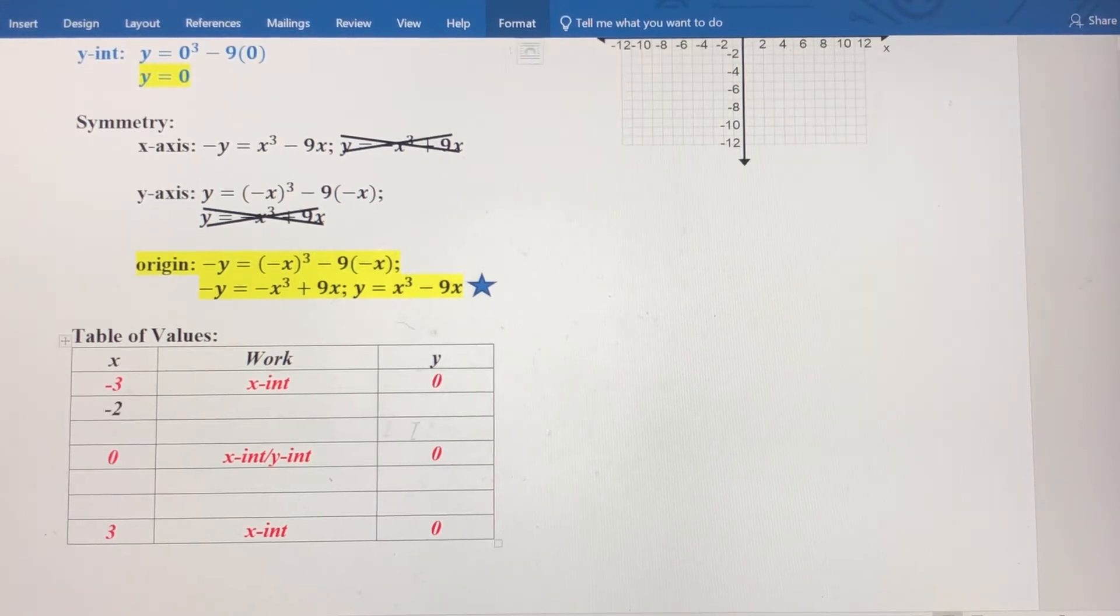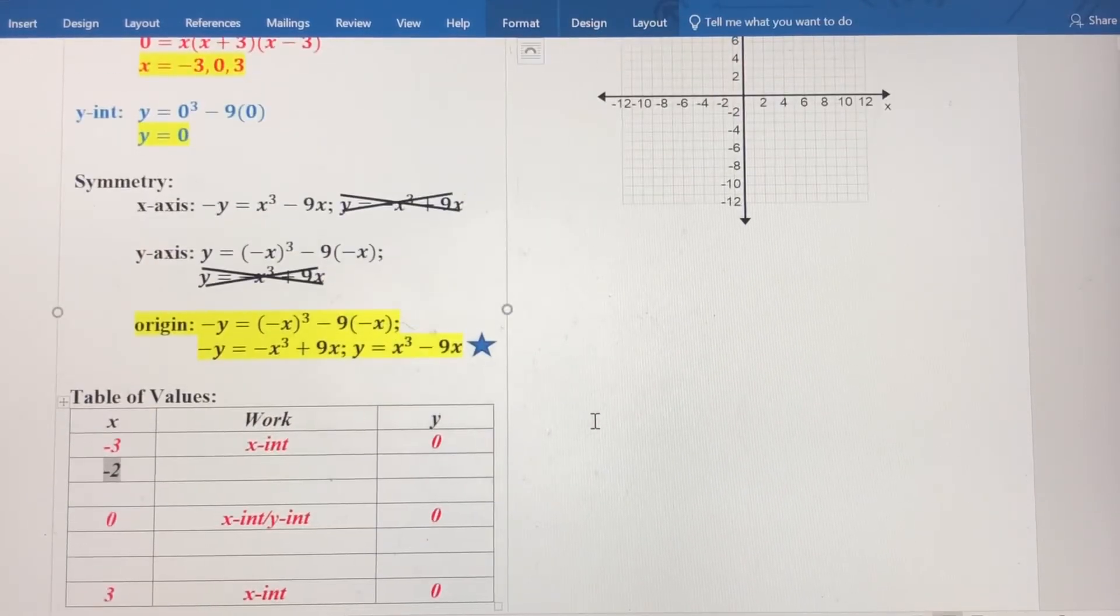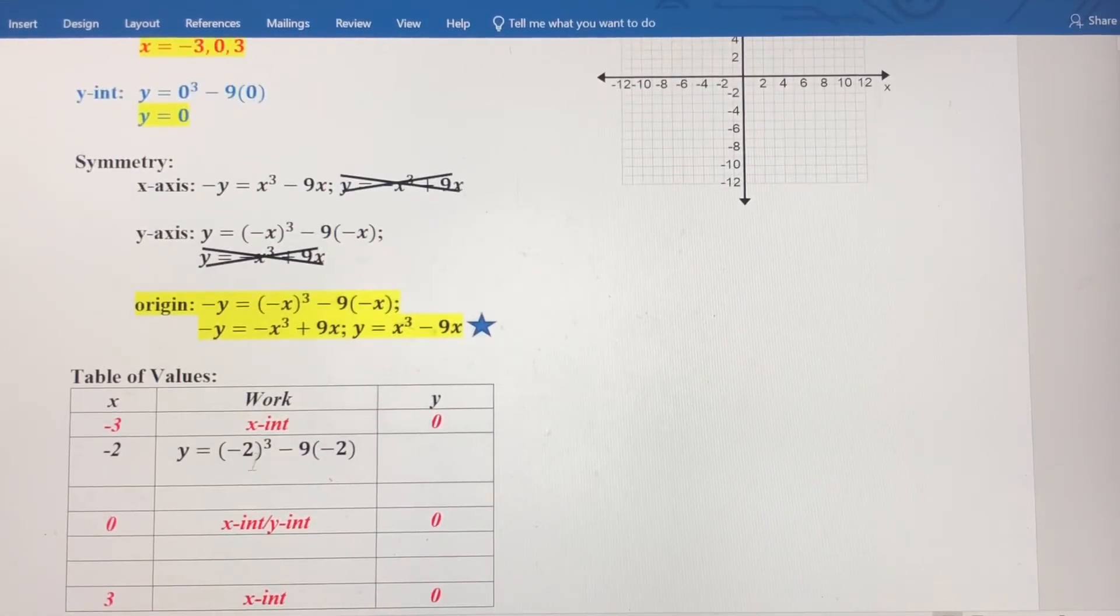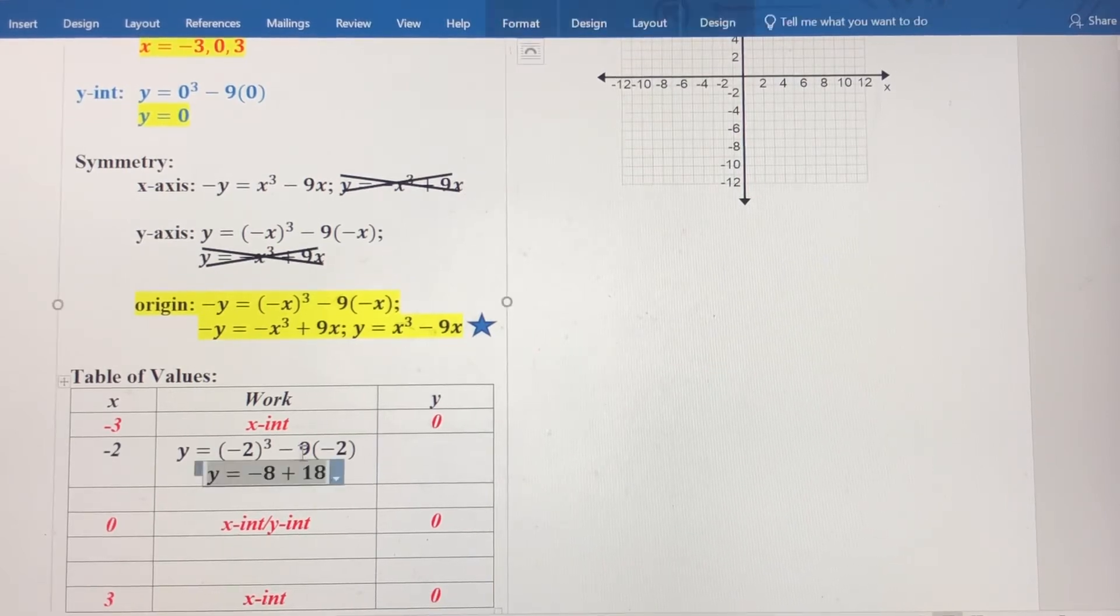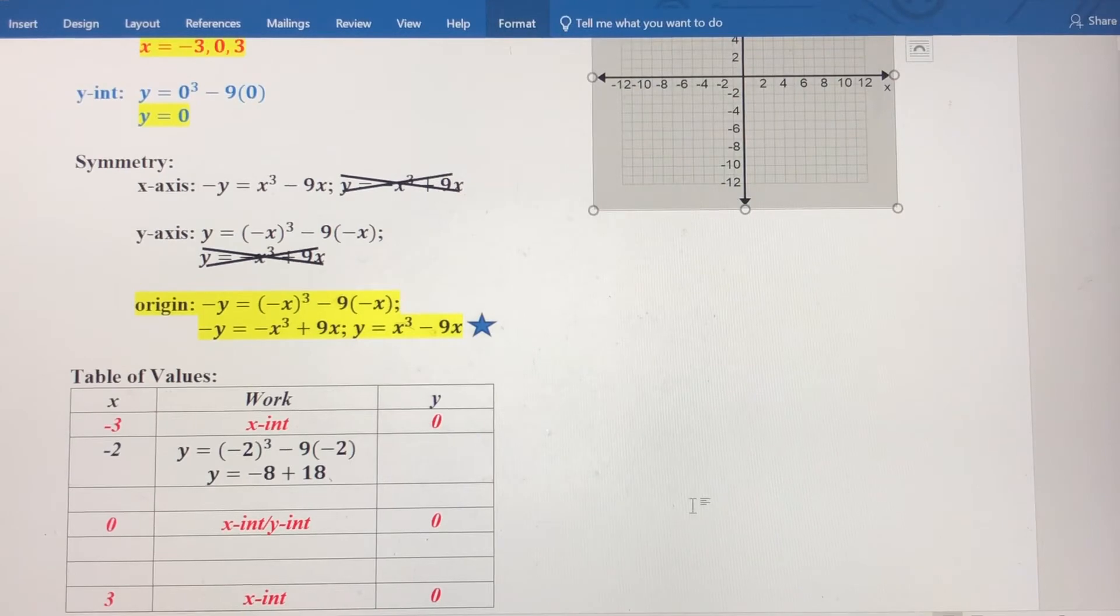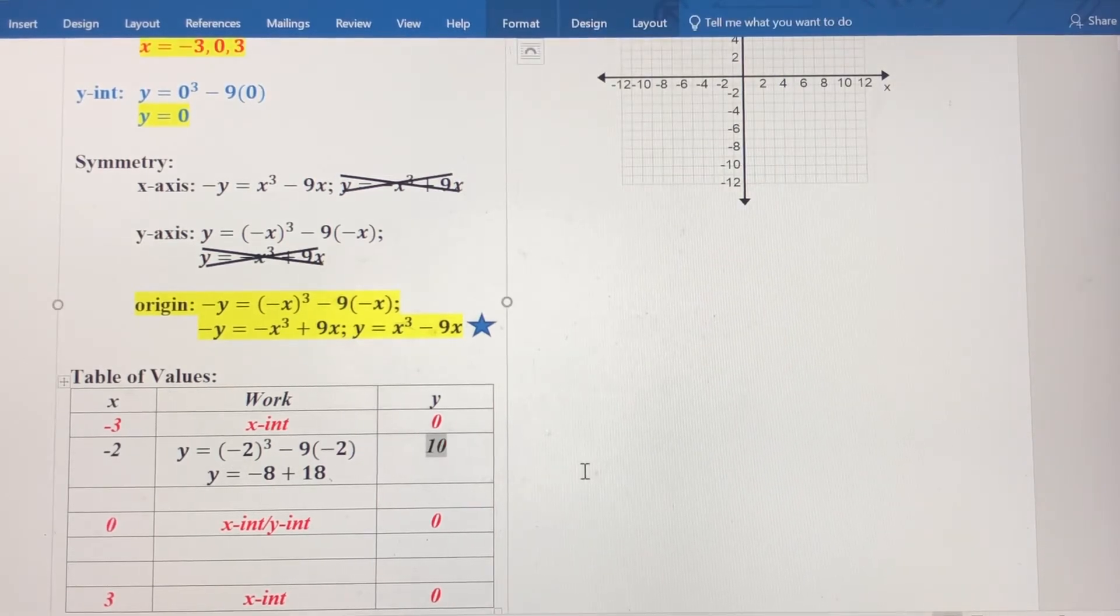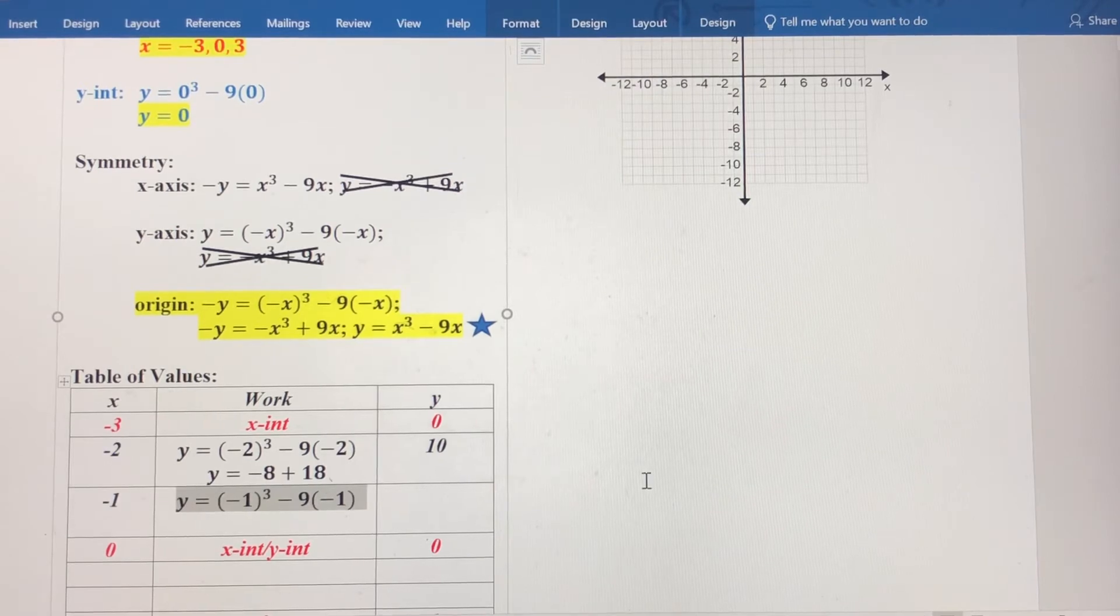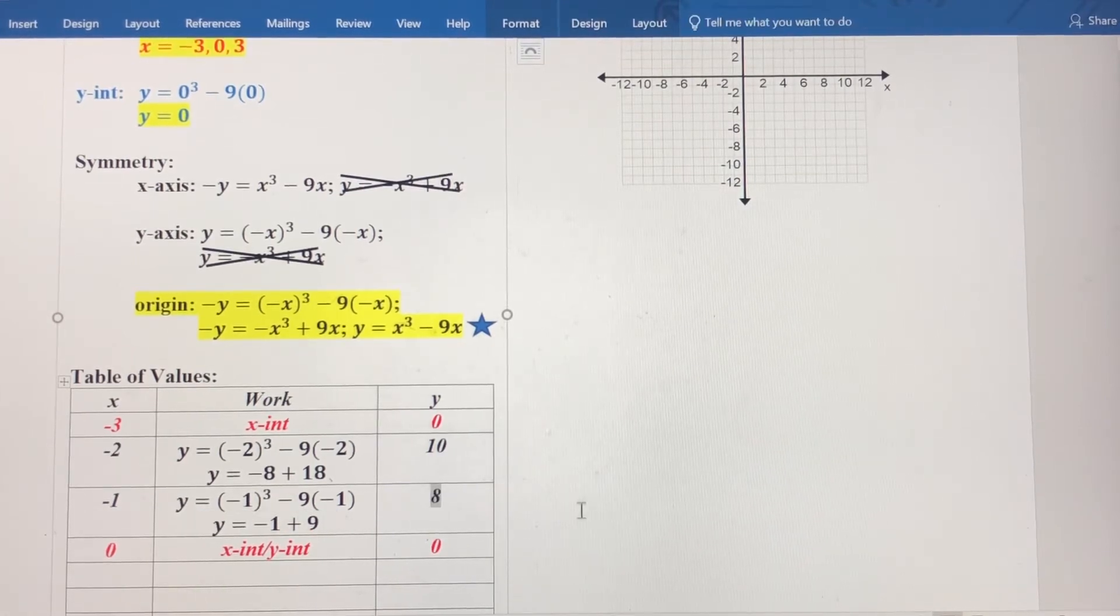So I'm going to plug in negative 2. Let's plug that into the original equation. You can see I'm doing that here. And then let's do the steps. So when I cube a negative 2, I get negative 8. And then negative 9 times negative 2 is positive 18. So when I substitute negative 2 into the equation for x, I get y equals positive 10. Now let's do the same thing with negative 1, and then we'll talk about how the symmetry plays in. So if I substitute negative 1 in for x, I get y equals negative 1 cubed minus 9 times negative 1, which gives me negative 1 plus 9, which is positive 8.